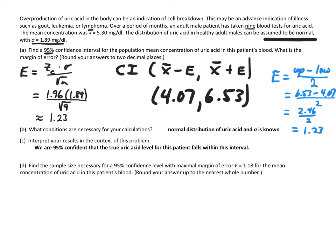Part B: what conditions are necessary? We're told the distribution of uric acid in healthy adult males is normally distributed and sigma is given. The confidence interval we found: we are 95% confident that the true uric acid level for this patient falls within this interval. We can only take what we know about the 9 blood tests, but we're 95% sure the actual level would fall in our confidence interval.